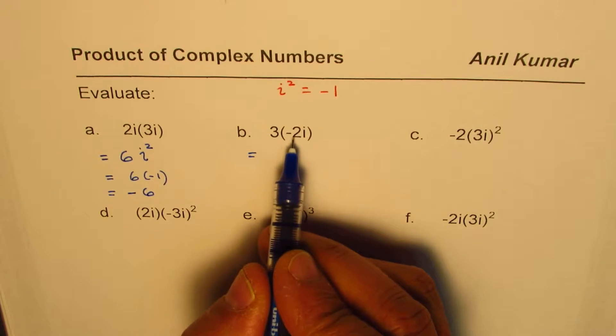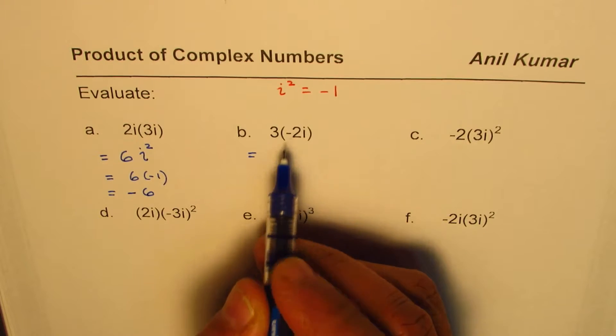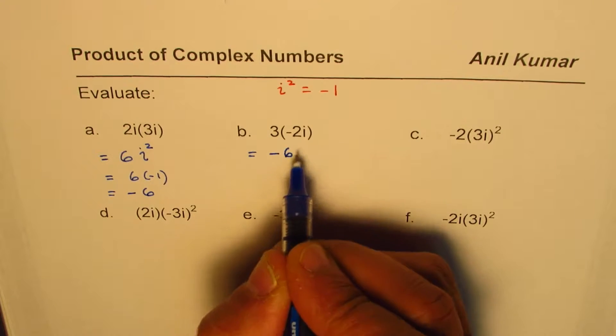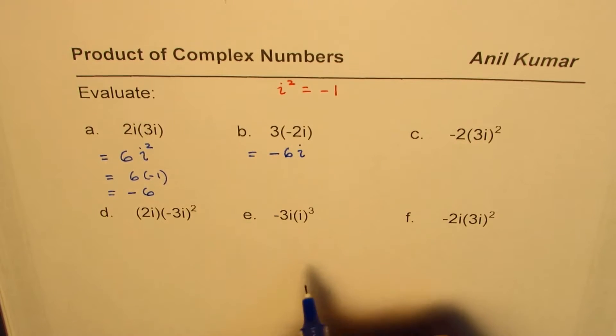Second example: 3 times -2i. 3 times -2 is -6, and then i, so that's the result: -6i.